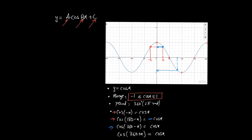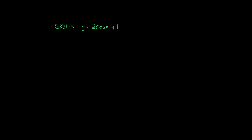The identity cos(360 - x) = cos(x): if x is 30 degrees, then 360 - 30 = 330 degrees gives the same trigonometric ratio. Similarly, cos(360 + x) = cos(x), so adding 360 gives the same value — for example, cos(-270°) equals cos(90°).